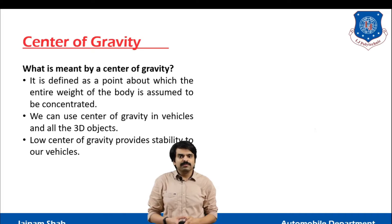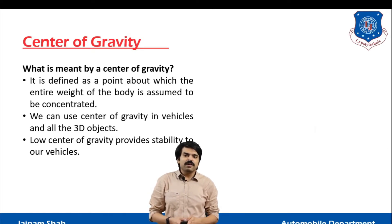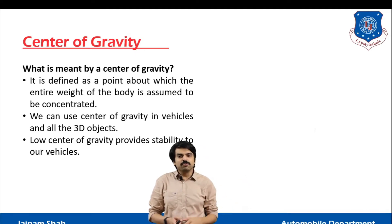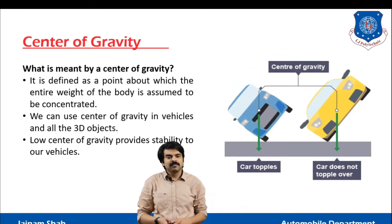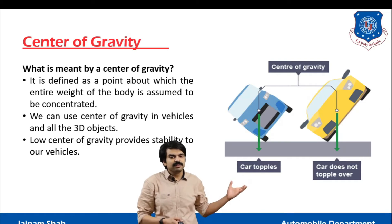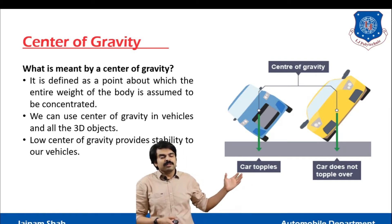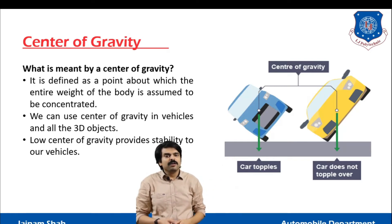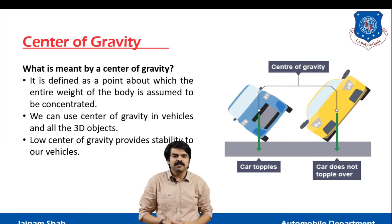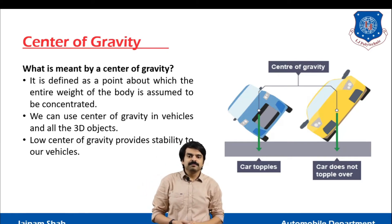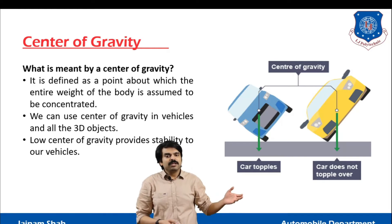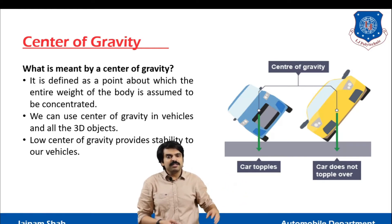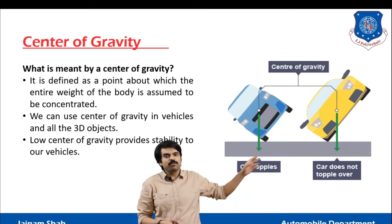As we all know, lower the center of gravity means our object is more stable. In this illustration we can see there is a sports car and there is a hatchback, but our sports car has a lower center of gravity, which means it is more stable than the hatchback. So the possibility of our car toppling on a sharp turn is less in the sports car.